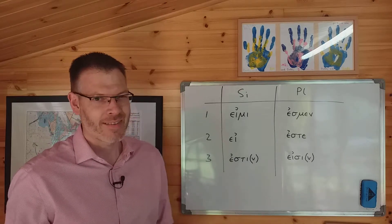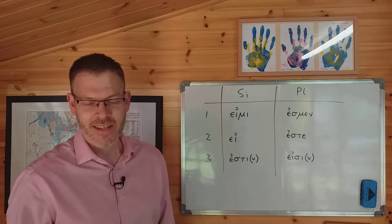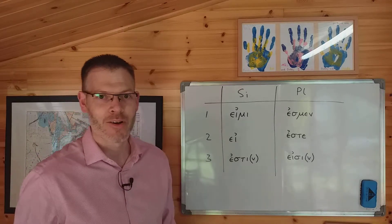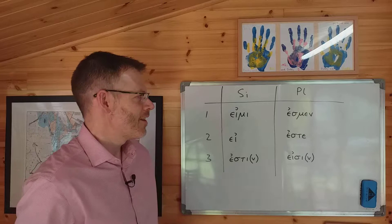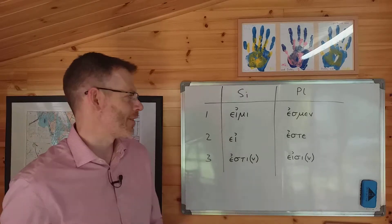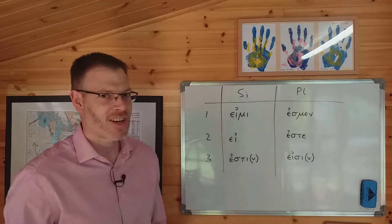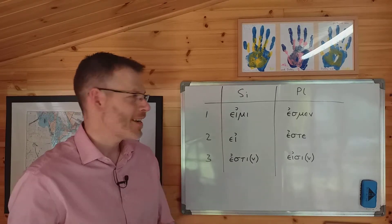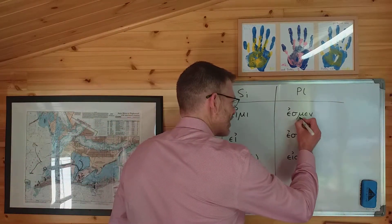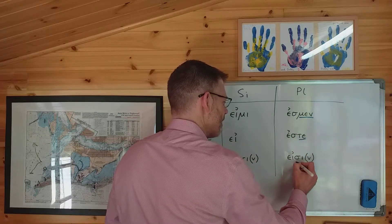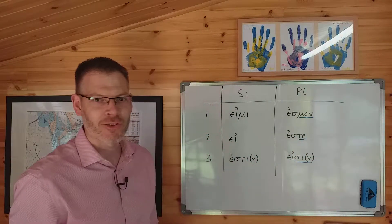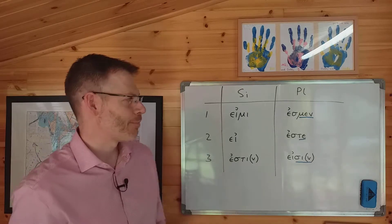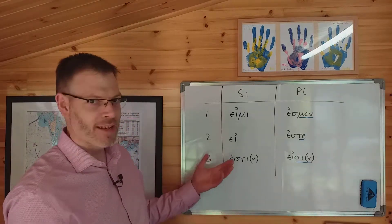The second thing to notice is, and this is the bad news you've already spotted, this looks pretty unfamiliar. If you have been diligently learning your λύω, λύεις, λύει, λύομεν, λύετε, λύουσιν, and so on, you will be pretty dismayed to discover that εἰμί, εἶ, ἐστίν doesn't look much like that.